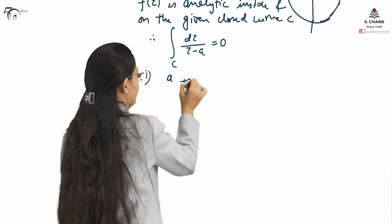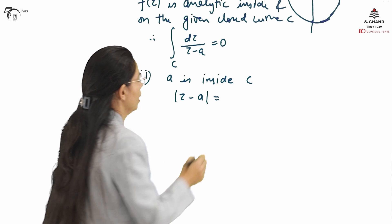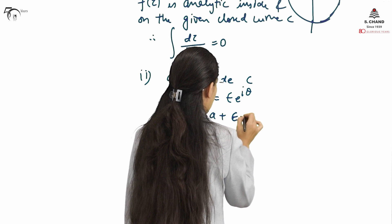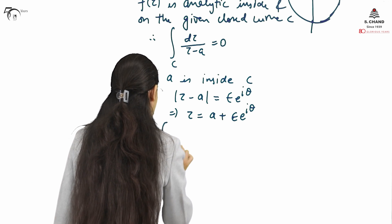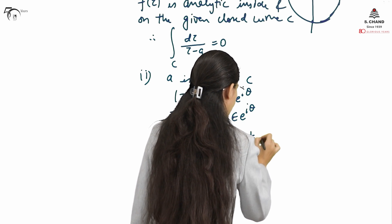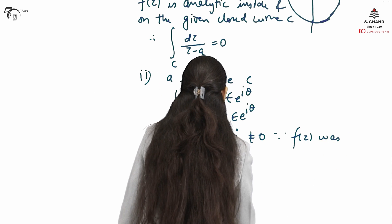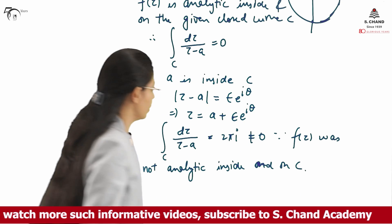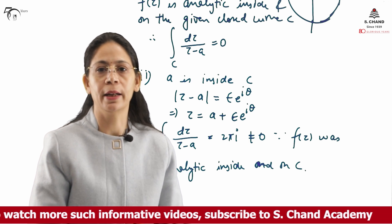For the second part, when A is inside C, we cannot apply the Cauchy-Goursat theorem. We write z − a = ε·e^(iθ), so z = a + ε·e^(iθ). Evaluating the integral using this substitution, the value of ∮_C dz/(z − a) = 2πi, which is not zero, since f(z) was not analytic inside and on C.